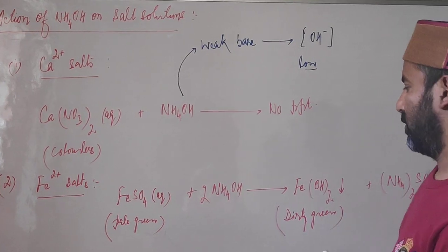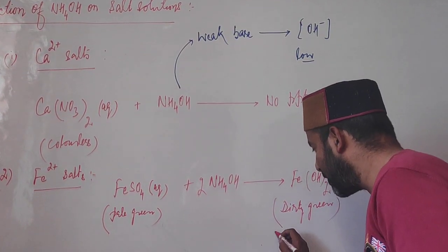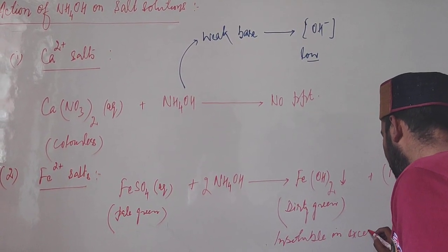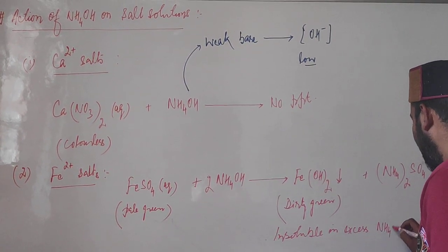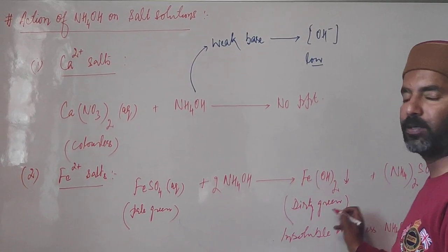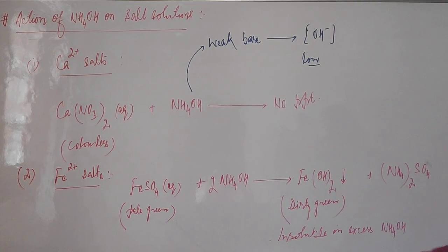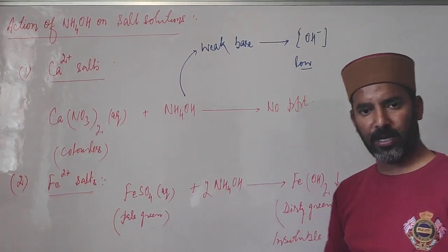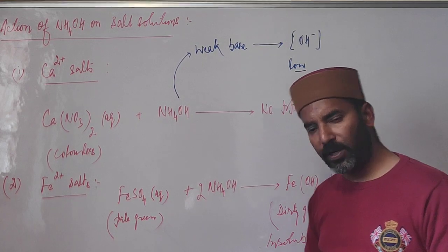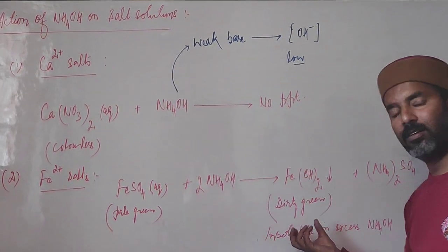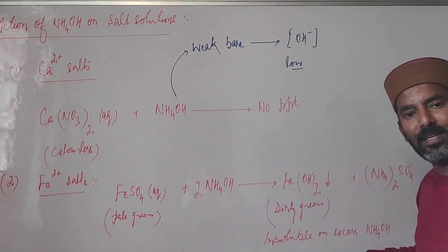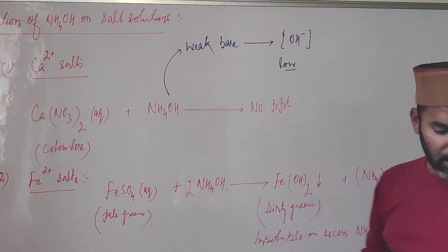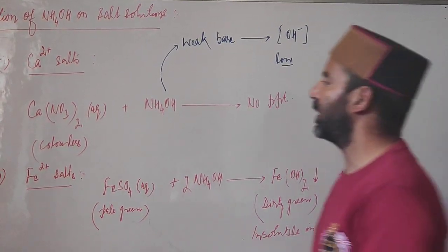This dirty green precipitate remains insoluble in excess ammonium hydroxide — it will not dissolve. We use this test to identify ferrous ions: prepare the salt solution, add ammonium hydroxide, and if you get a dirty green precipitate that remains insoluble in excess ammonium hydroxide, the salt contains ferrous ions. Next, we discuss ferric salts containing Fe³⁺ ions.